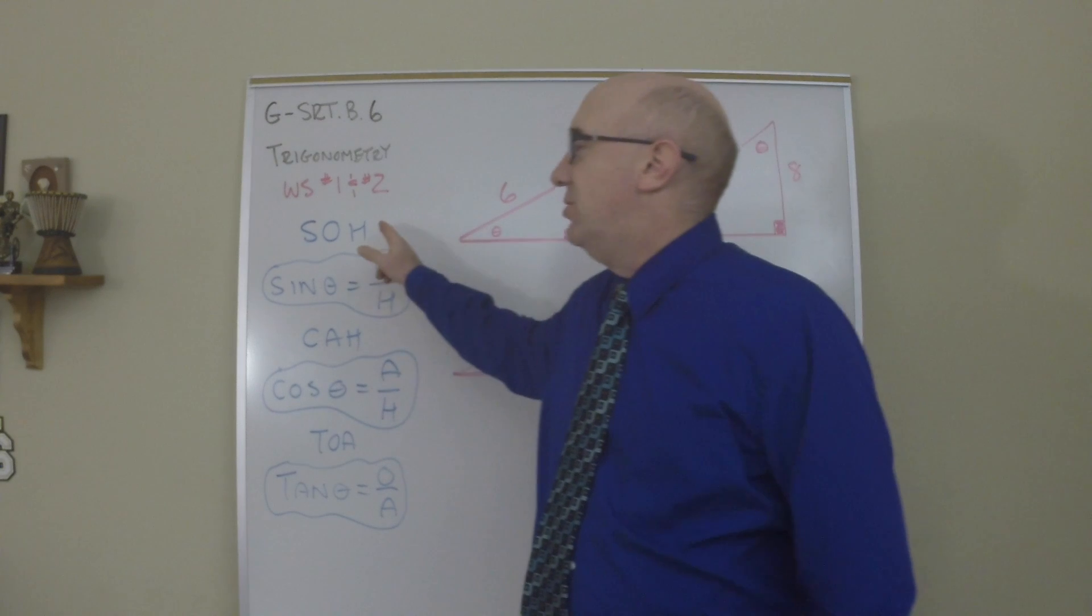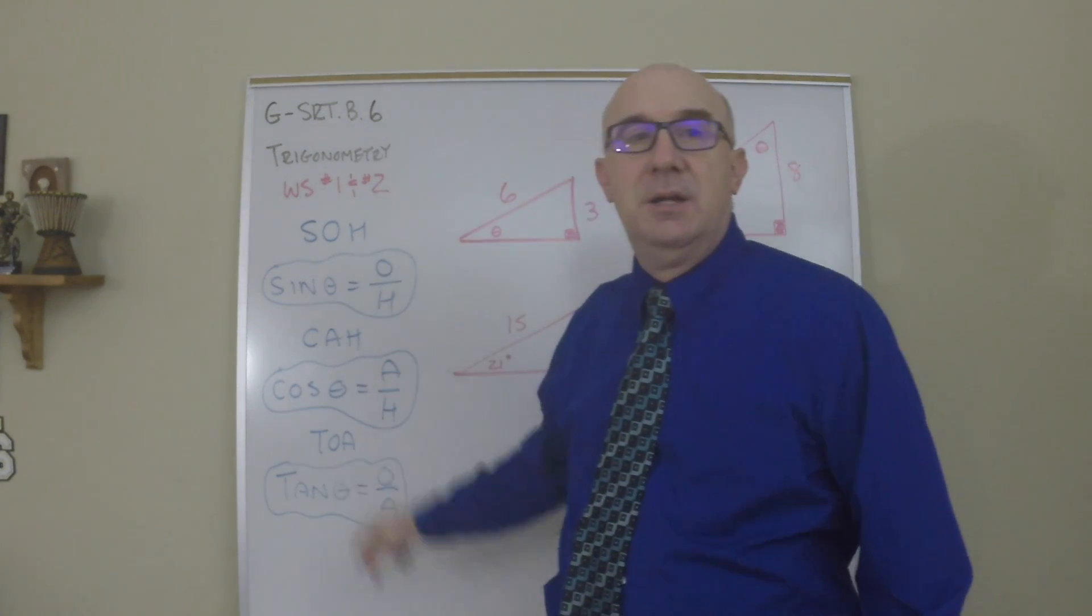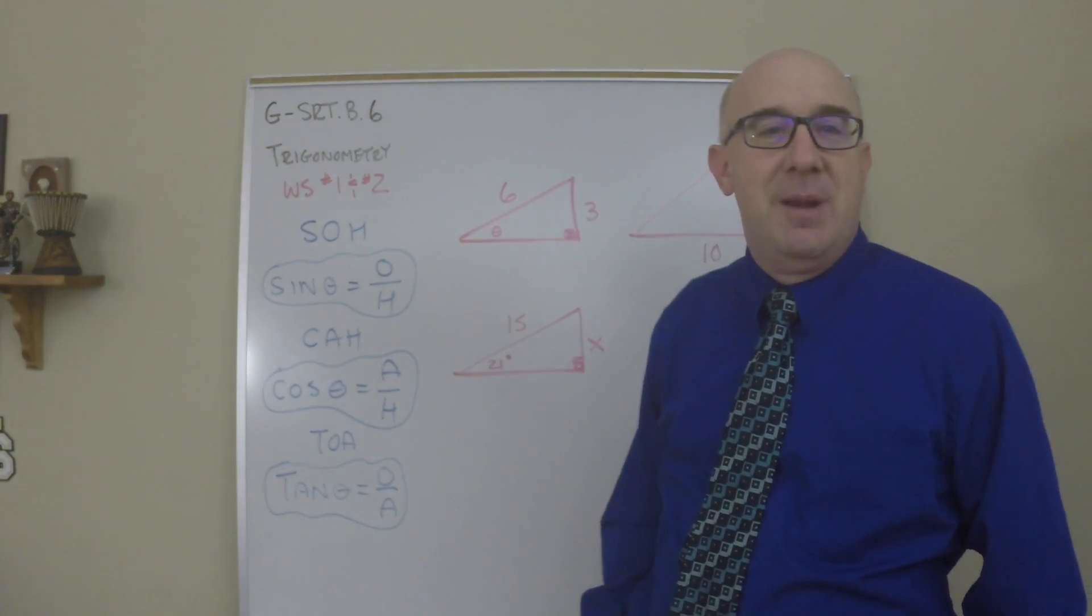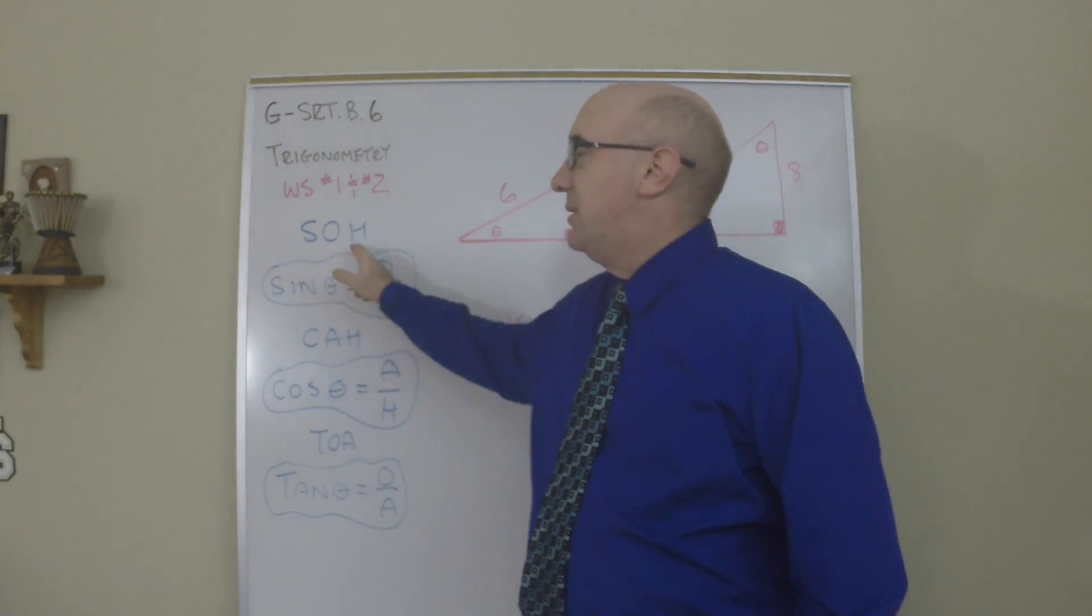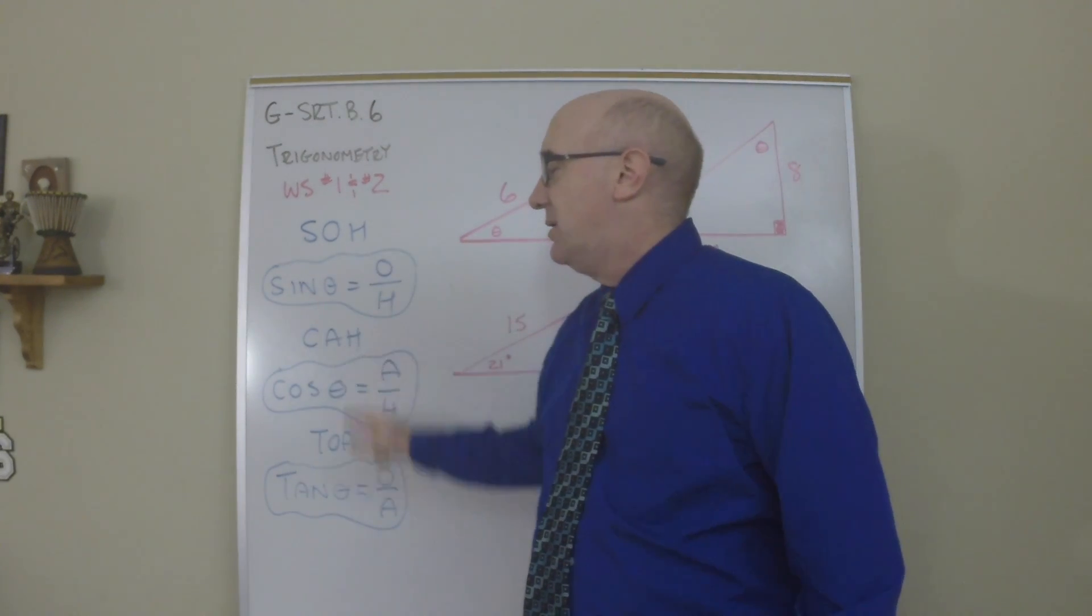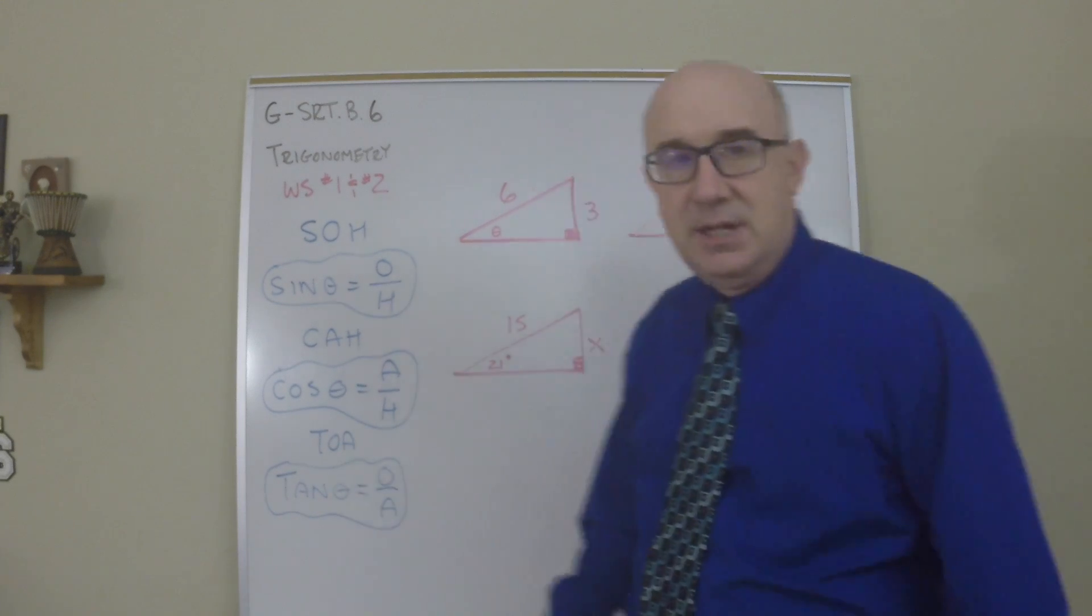So sometimes teachers use SOH-CAH-TOA as a way to help students remember it. Sine is opposite to hypotenuse. Cosine is adjacent to hypotenuse. Tangent is opposite to adjacent.